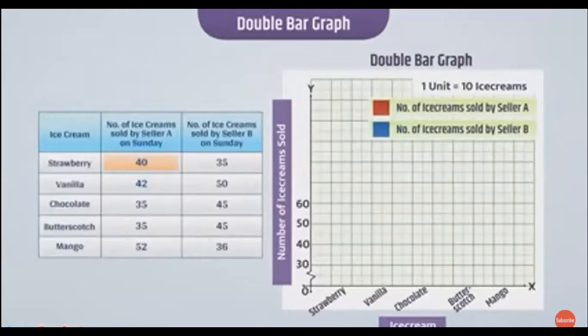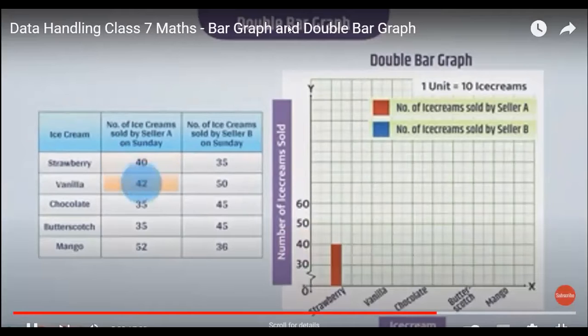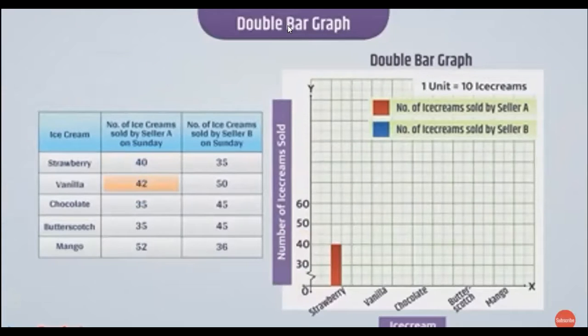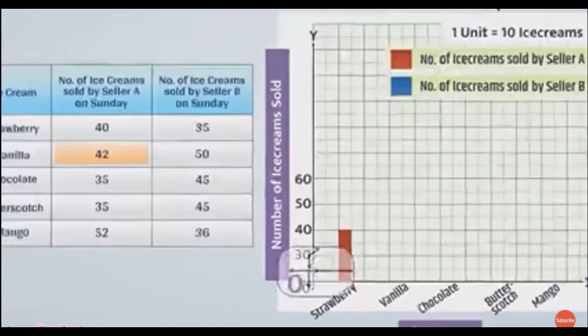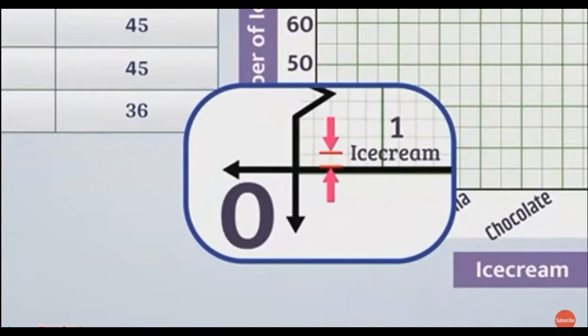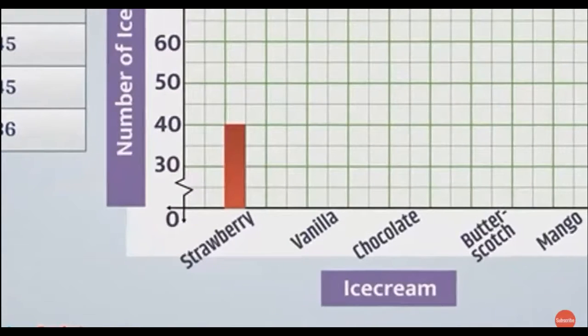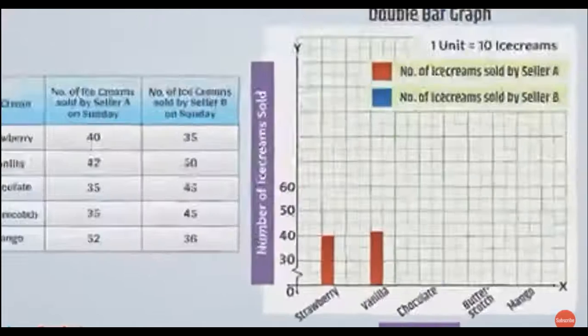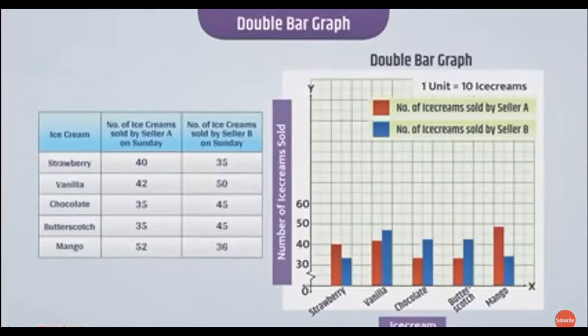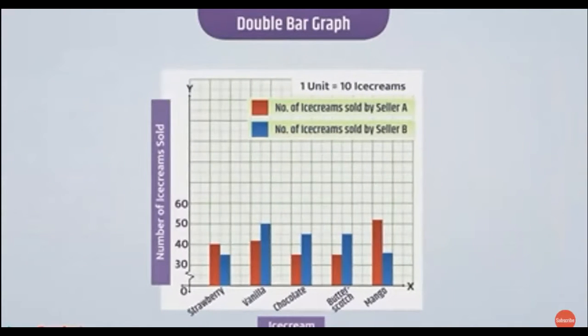Seller A sold 40 strawberry ice creams, so draw a bar from 0 to 40. He sold 42 vanilla ice creams. Since 42 is between 40 and 50, and each unit represents 10 ice creams, the tenth part of unit represents 1 ice cream. To represent 42, consider 2 parts of unit length out of 10 parts after 40. Draw a bar extending from 0 to 42. In the same way, finish drawing the double bar graph. Note that we have used different kinds of bars to represent each seller.